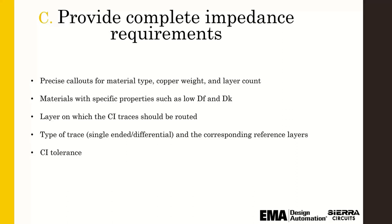In providing complete impedance requirements, it's the material type, the copper weights. If you have specific Dk requirements, you can let the fabricator know and they would probably pick the material they're most comfortable using. You want to specify exactly what layer you have your controlled impedance traces on, and you want to specify your reference layers. All of that should be extremely well detailed in your fabrication drawing. In terms of controlled impedance tolerances, 10% is normal, and you can request 5% if you need it.